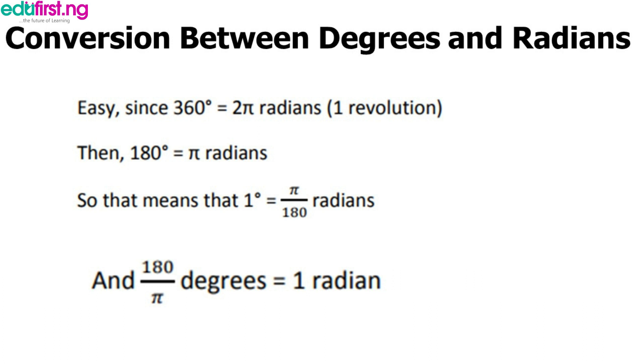When we want to convert from degrees to radians, or from radians back to degrees, here is the formula threshold — you place the value into this formula accordingly.